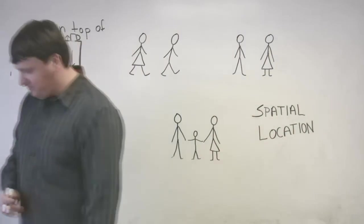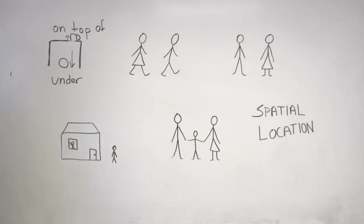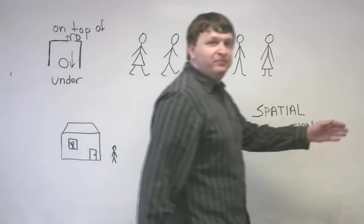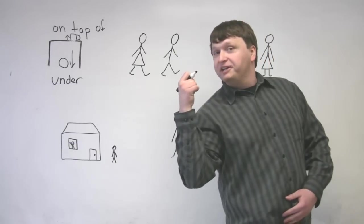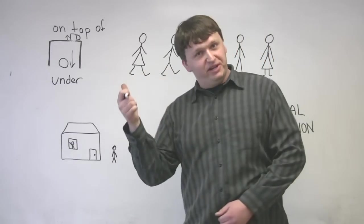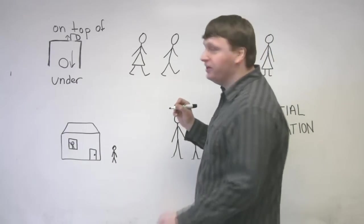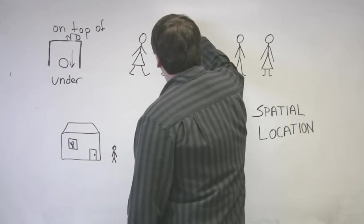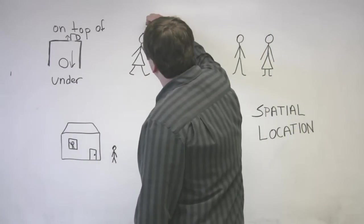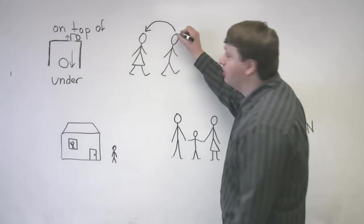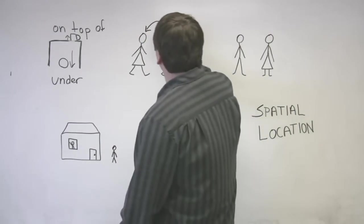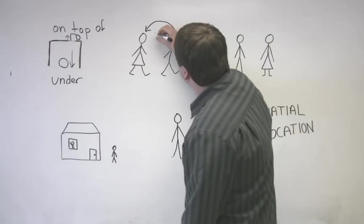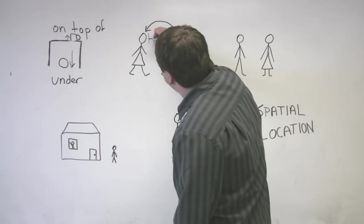So if the boy, watch, he's walking this way. He looks this way. Behind him is a girl. Well, I'll just give you the answer. The girl is behind the boy. So I'm pointing to the girl. The girl is behind the boy.